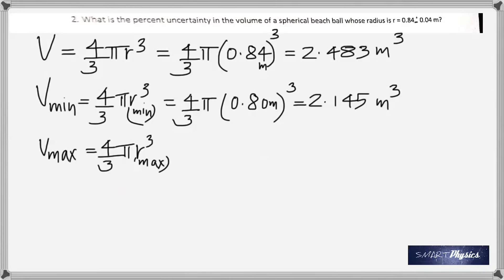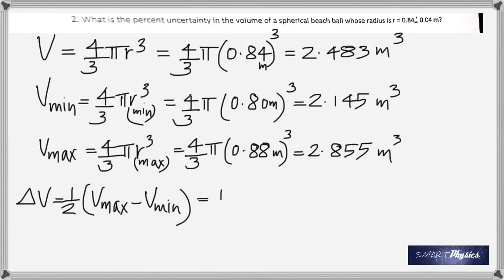So we get 4 by 3 π, 0.80, that is 0.84 minus 0.04, that gives a volume of 2.145 meter cube. And then similarly, find the maximum volume, for which the radius would be 0.84 plus 0.04, and that's how we get 0.88. Now, to find the change in volume, the difference, you take the difference between maxima and minima, v max minus v min, take the difference and divide by 2. So, one half the maxima, which is 2.855, take away the minimum, which is 2.145, and that gives 0.355 meter cube, which is the deviation.